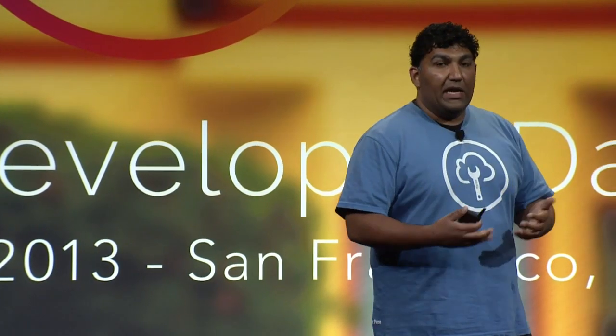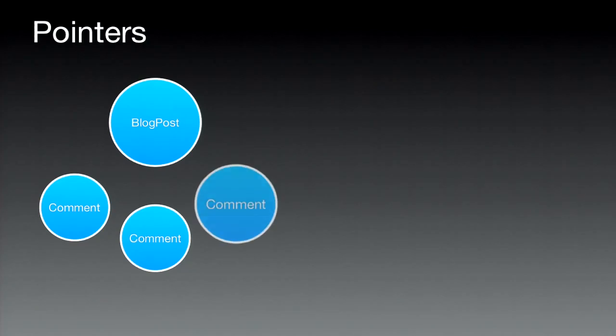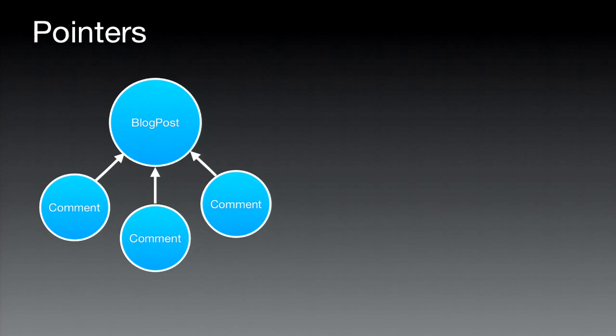Let's dive in and talk about pointers first. From the very beginning when you start the Parse quick start, pointers are where we get you started, so a lot of people default to them — and that's actually not a bad idea. Pointers are the most scalable way to build one-to-many relationships. For example, with a blog post and comments, we put a pointer on the comment object that points back to a blog post, creating a relationship between blog posts and comment objects.